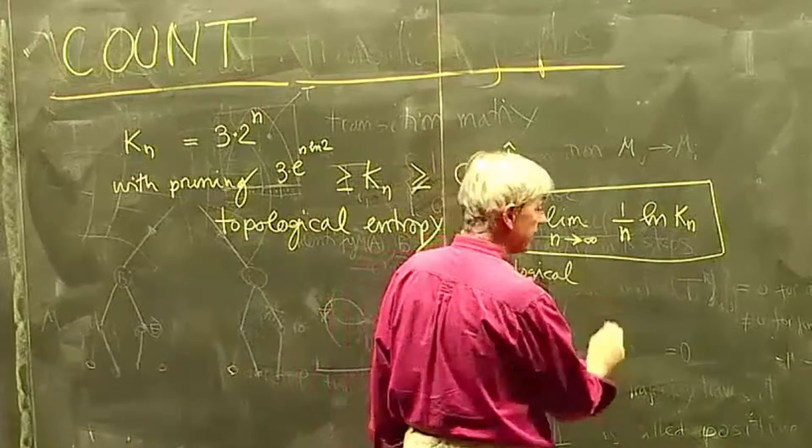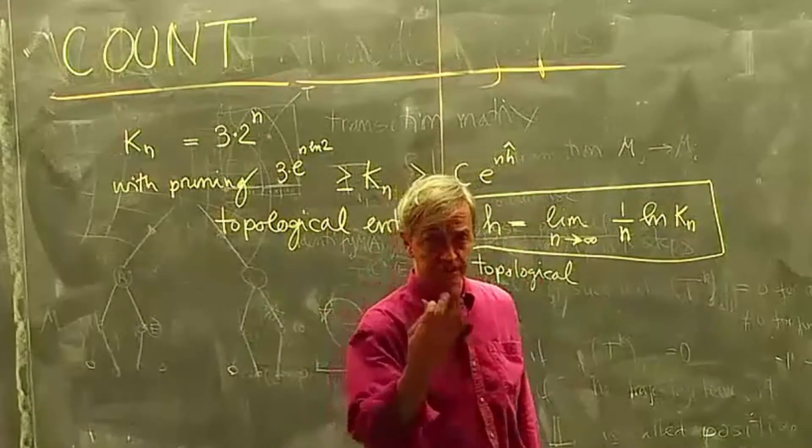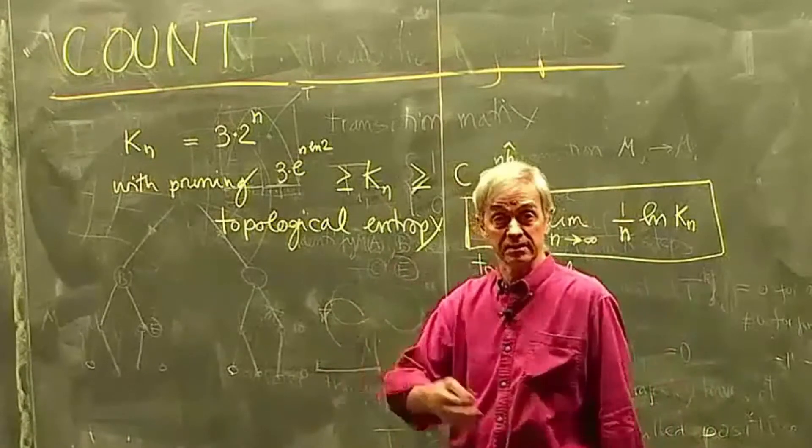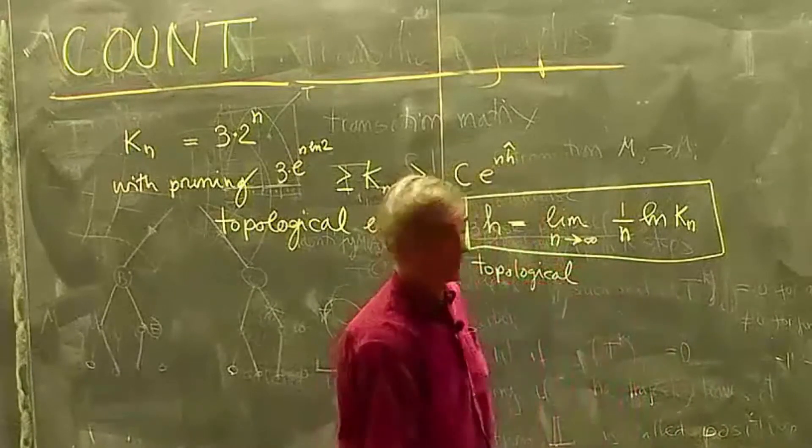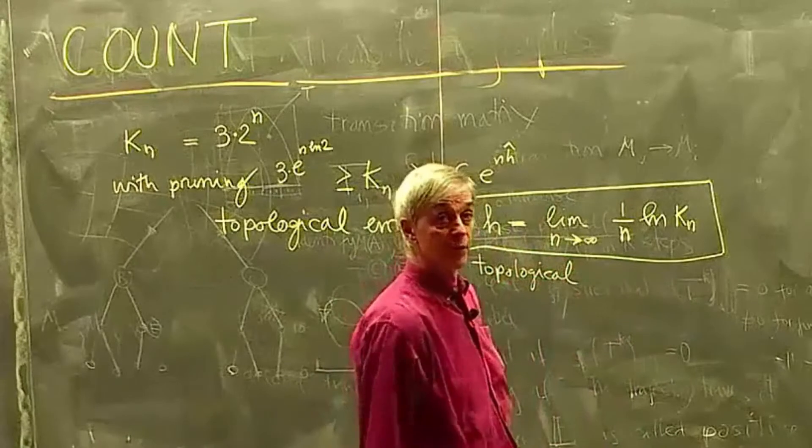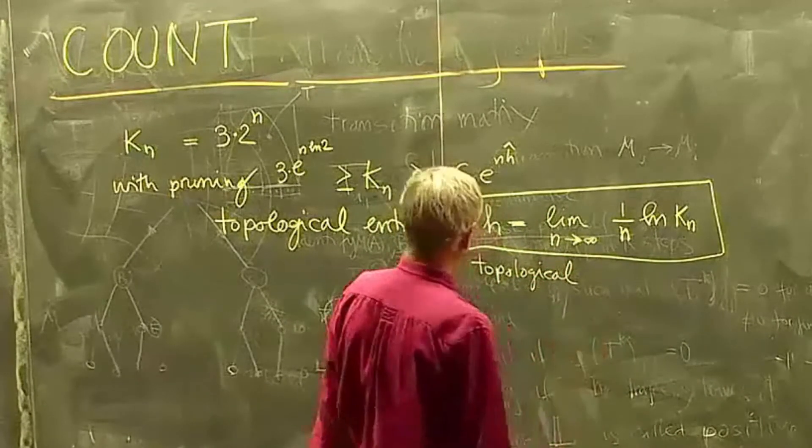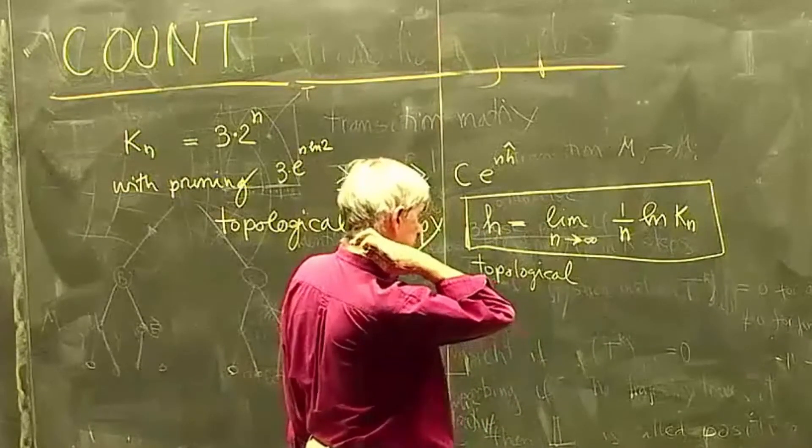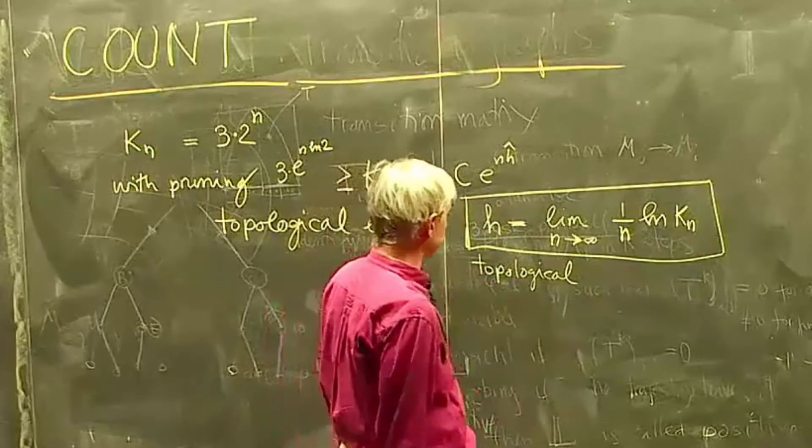And this constant is called topological. Not in any fancy sense of topology, algebraic geometry. It's topological, it just counts. I can go from here, not from here, so it doesn't give any more refined weight to transition from region to region. It only cares about whether you're connected by the graph or not.